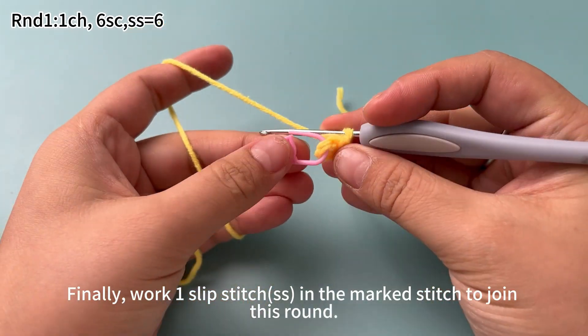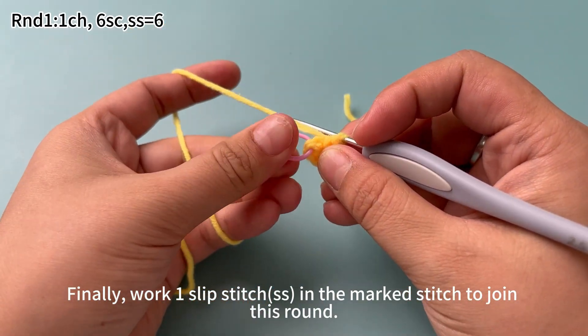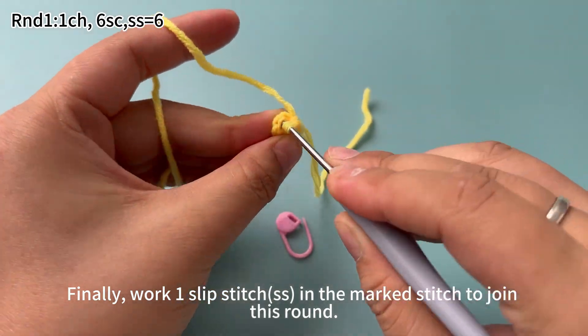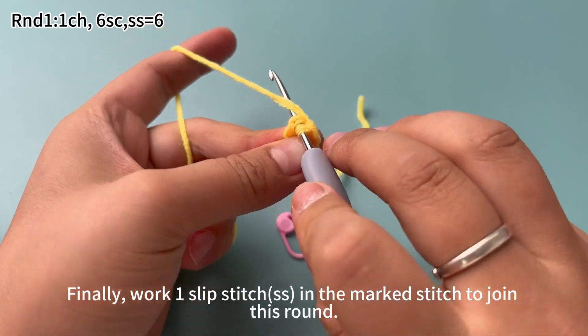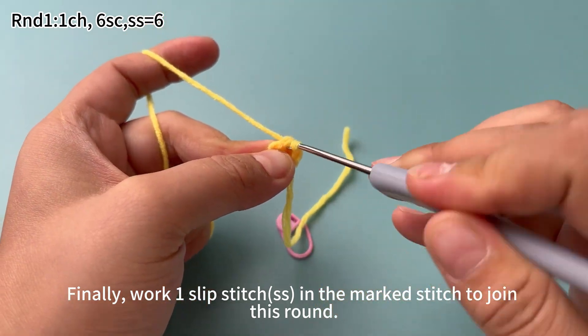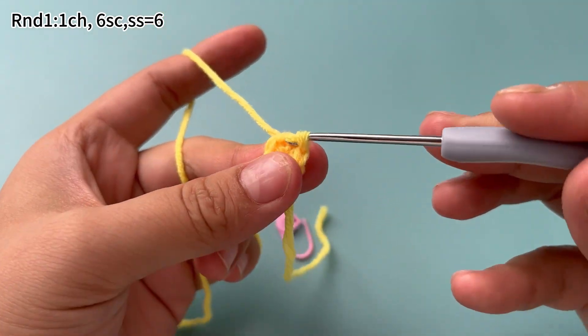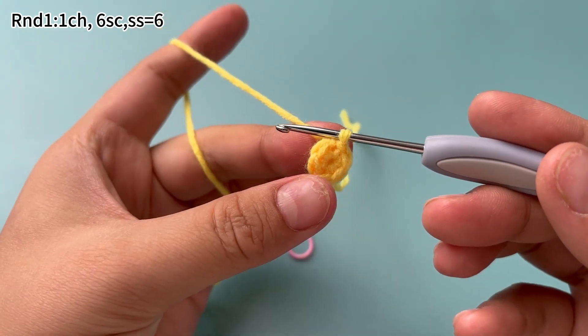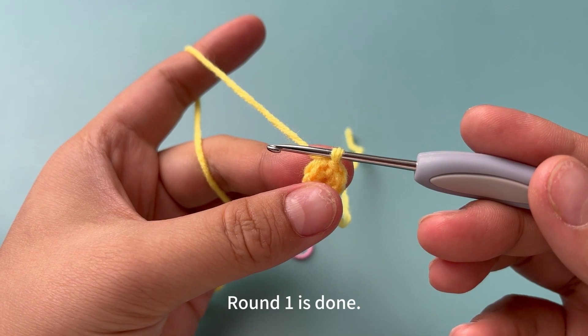Finally, work 1 slip stitch in the marked stitch to join this round. Round 1 is done.